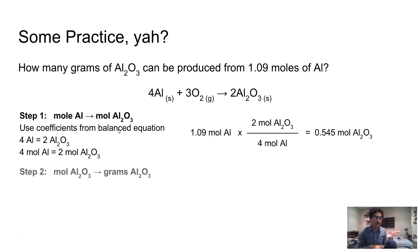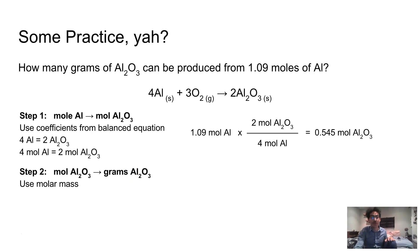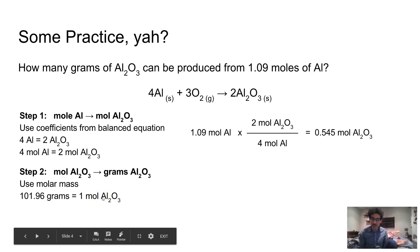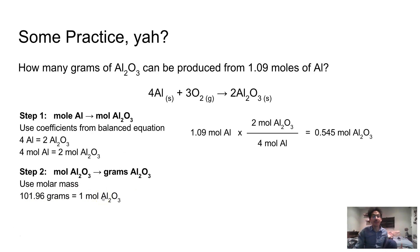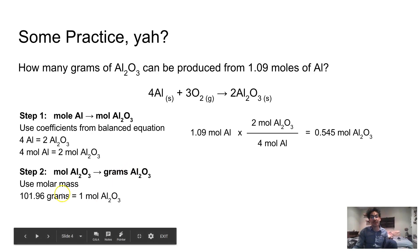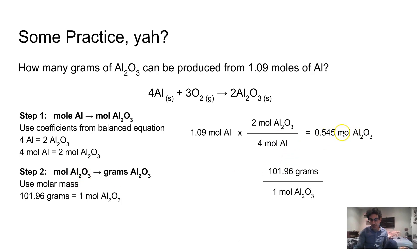Step two, I'm going to change those moles of aluminum oxide to grams of aluminum oxide. According to the mole roadmap, we're going to use the molar mass. I've got the molar mass of aluminum oxide — however many grams equals one mole. I'll put the grams up top as my new unit and the one mole of aluminum oxide down below as my old unit, then multiply by the moles of aluminum oxide I solved for previously. That gives me the final answer in grams of aluminum oxide.